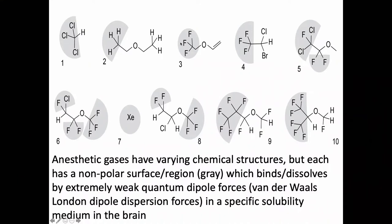The anesthetic gases are structurally very different — ethers, halogenated hydrocarbons, the inert gas xenon — but they have one common feature: a nonpolar region shown in gray. These are filled electron orbitals which don't have charge on them — nonpolar, kind of like oil. This suggested a solubility region where anesthetics might bind.